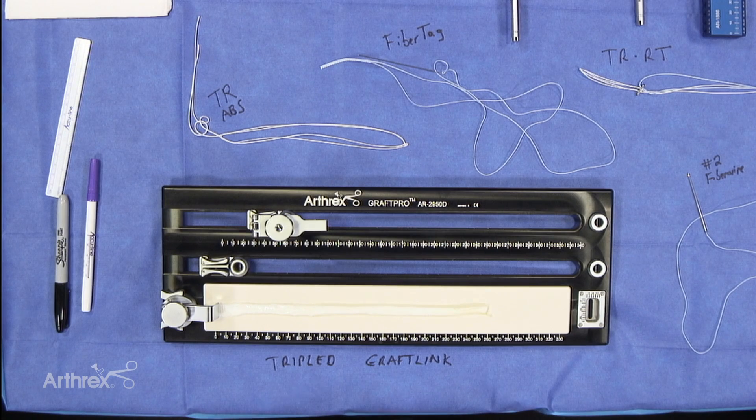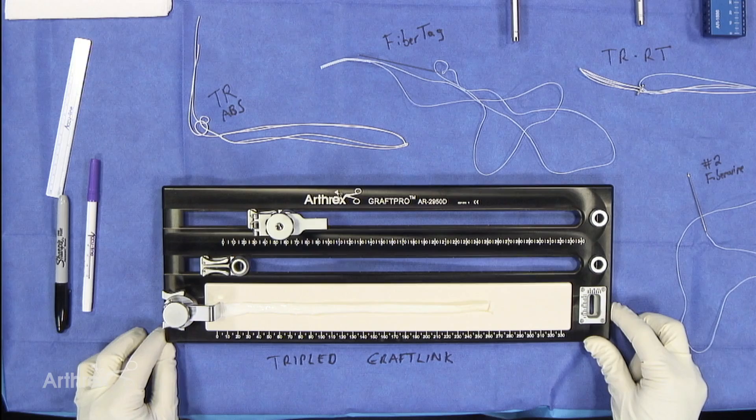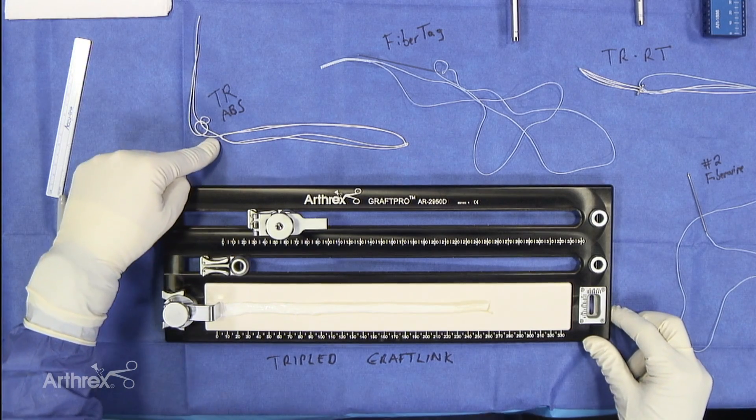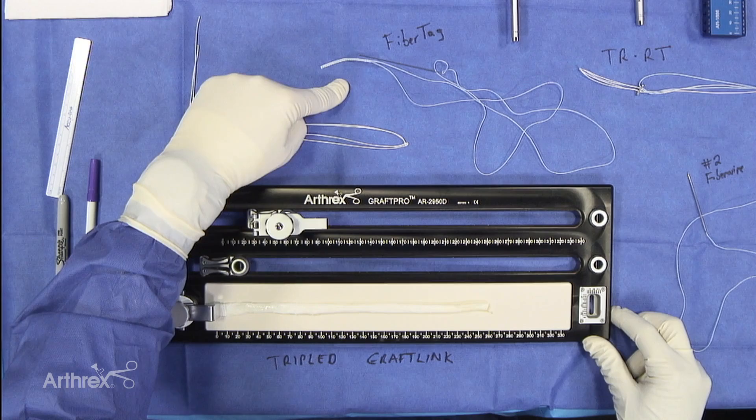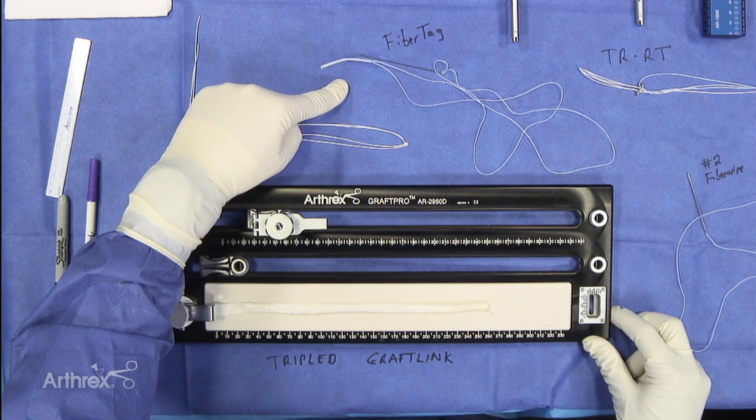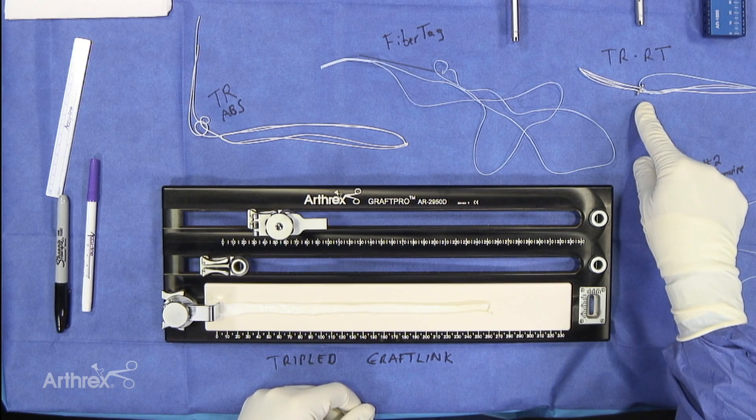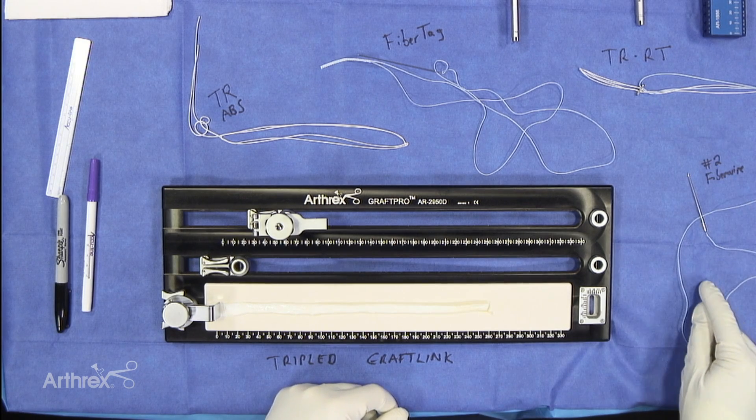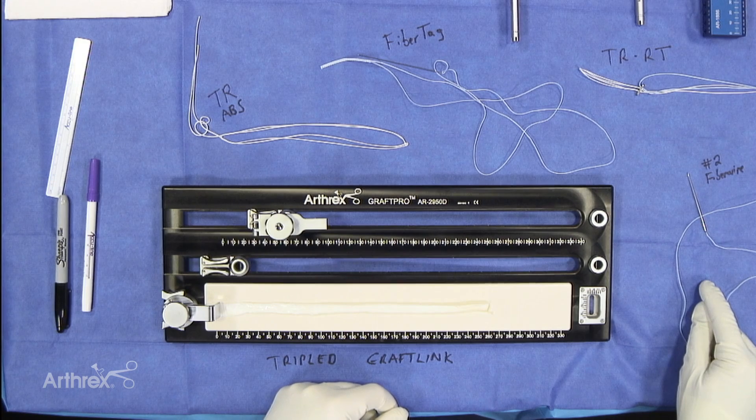So what we need is our graft probe board, we need our tightrope ABS, we'll use fiber tag to help secure the graft, our standard tightrope RT, and here we're using number two fiber wire on a straight needle.